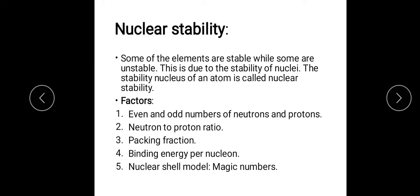Now, which factors affect nuclear stability? Number one: even and odd numbers of neutrons and protons. How many neutrons and protons are present in any atom — whether they are in even number or odd number — and how do they affect the nuclear stability?